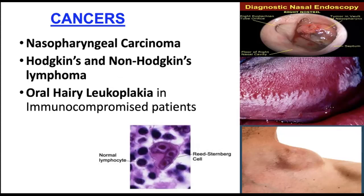There is also oral hairy leukoplakia, commonly seen in immune-compromised individuals, particularly those with HIV. It presents as white patches on the tongue and sides of the mouth. It is not debilitating — the patient can still eat — but it causes mild discomfort and sometimes changes in the taste of food.